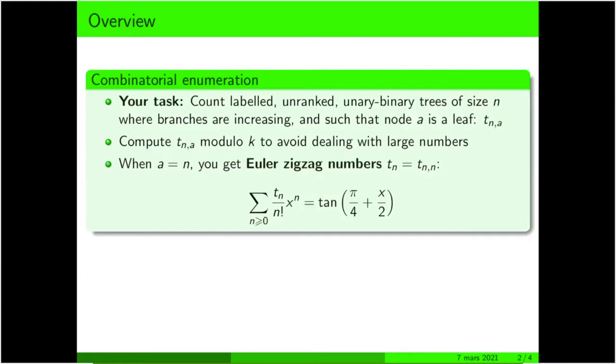We do have two constraints. The first one is that when you go from a branch, from the root to a leaf, then the sequence of labels you see is increasing, and the second constraint is that the node we will label a is a leaf of the tree.